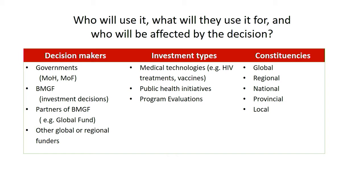When we looked at the decision makers, it wasn't just the Gates Foundation itself. Gates wanted to use these economic evaluations to empower country governments, ministries of health and finance to make their own decisions. There were also partners like Global Fund and Gavi, and other regional and global funders. Investment types varied too — not just individual technologies, but public health initiatives and program evaluations as well.